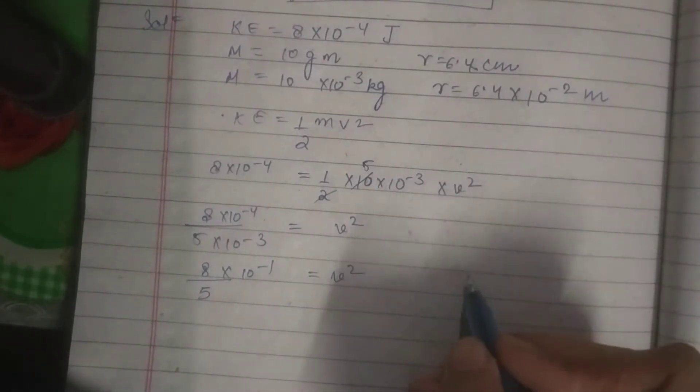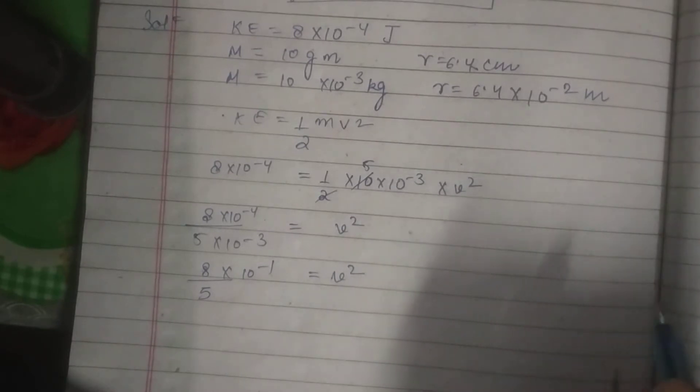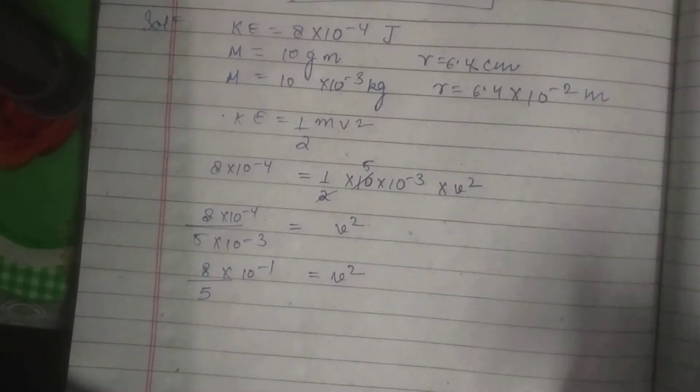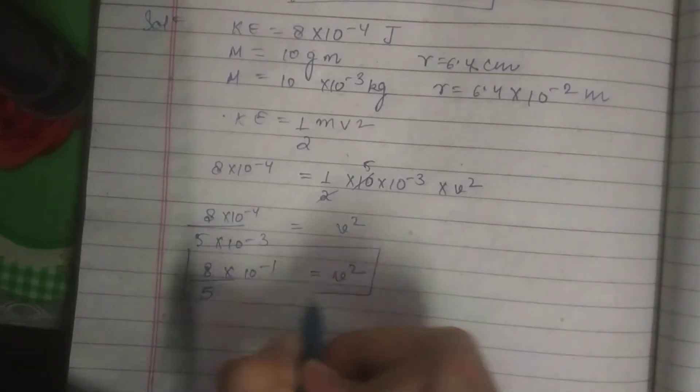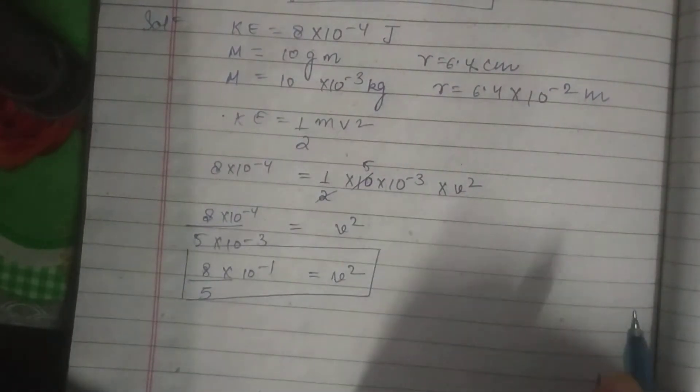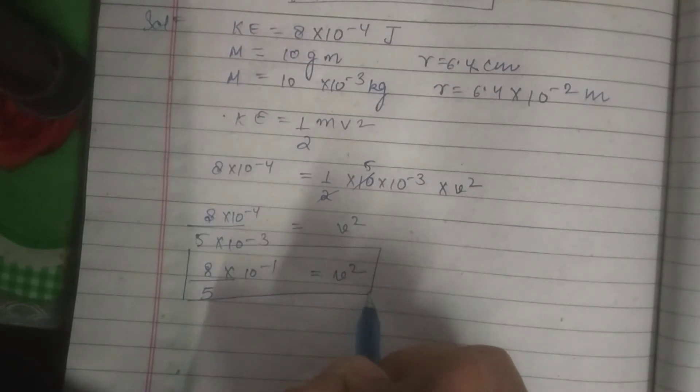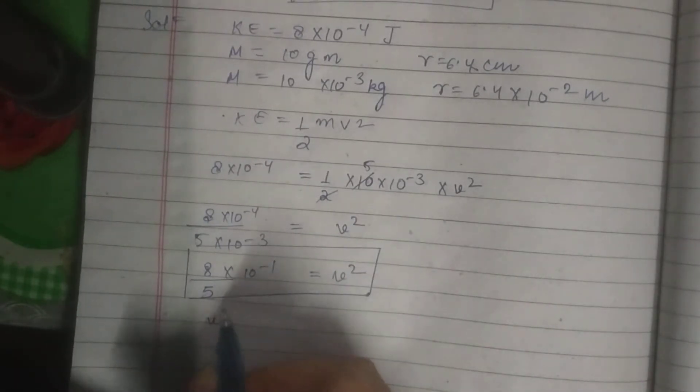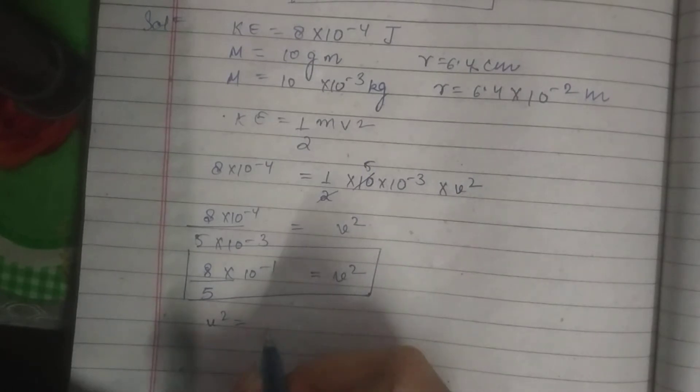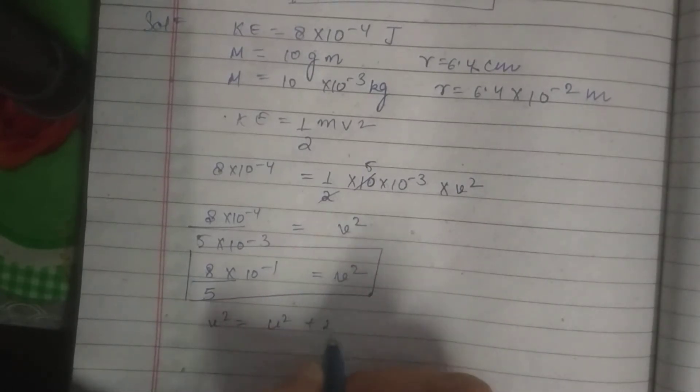And we also know that the acceleration, how can we find the acceleration? Here we have this value, and from this value we also know that we will apply the three equations of motion. We know v square is equal to u square plus 2 a s, which is tangential acceleration.